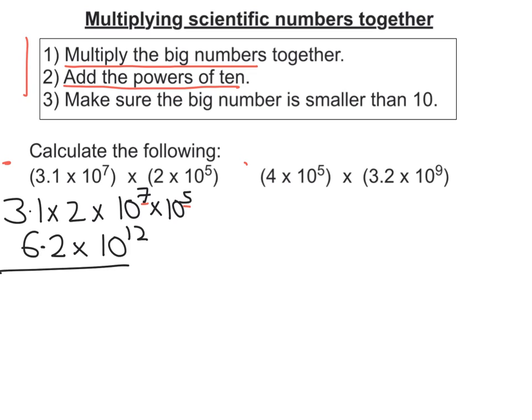Let's try the second example. So again rearrange it to get the big numbers together and then the 10s together.